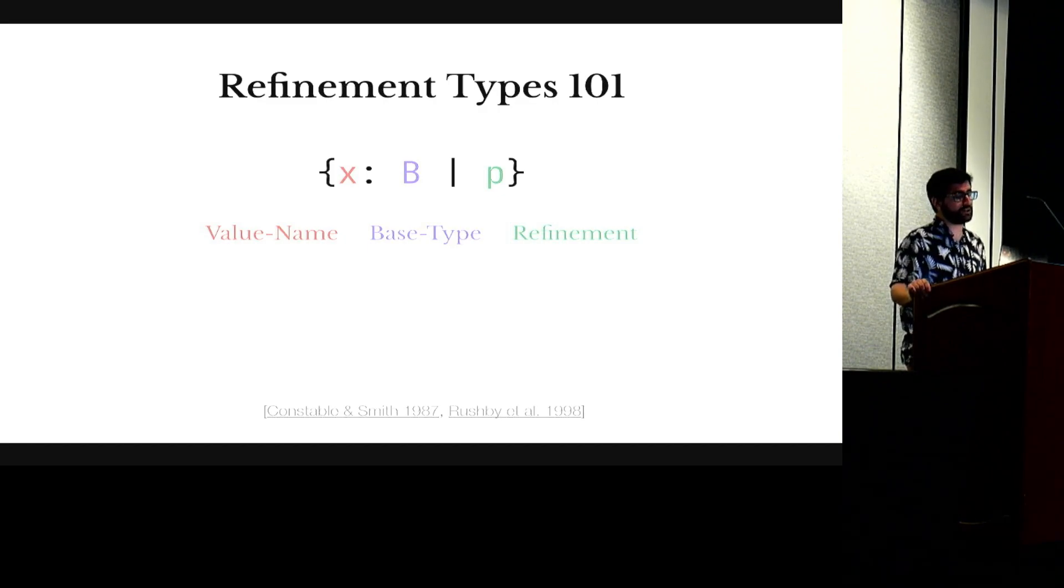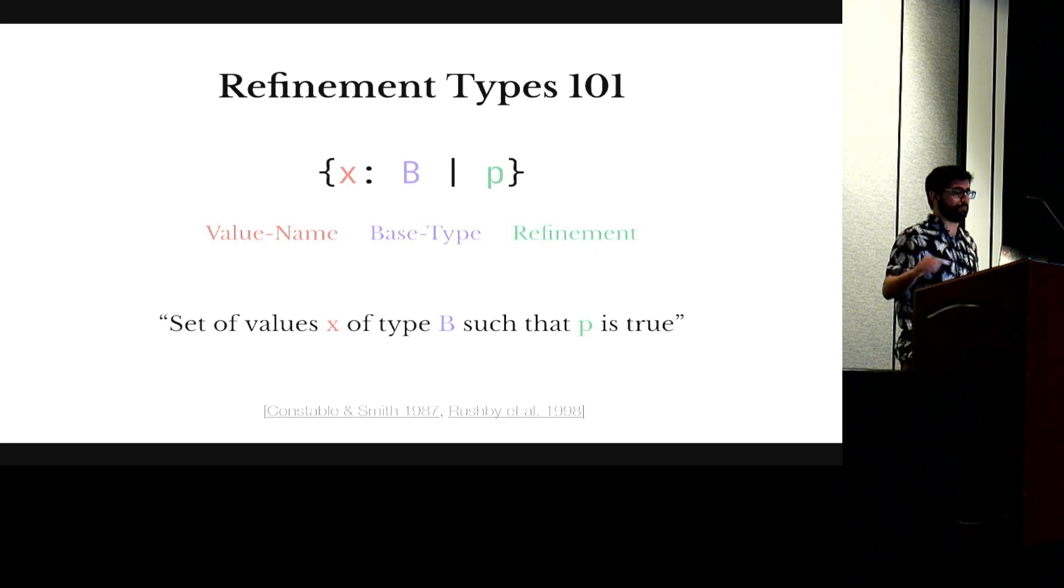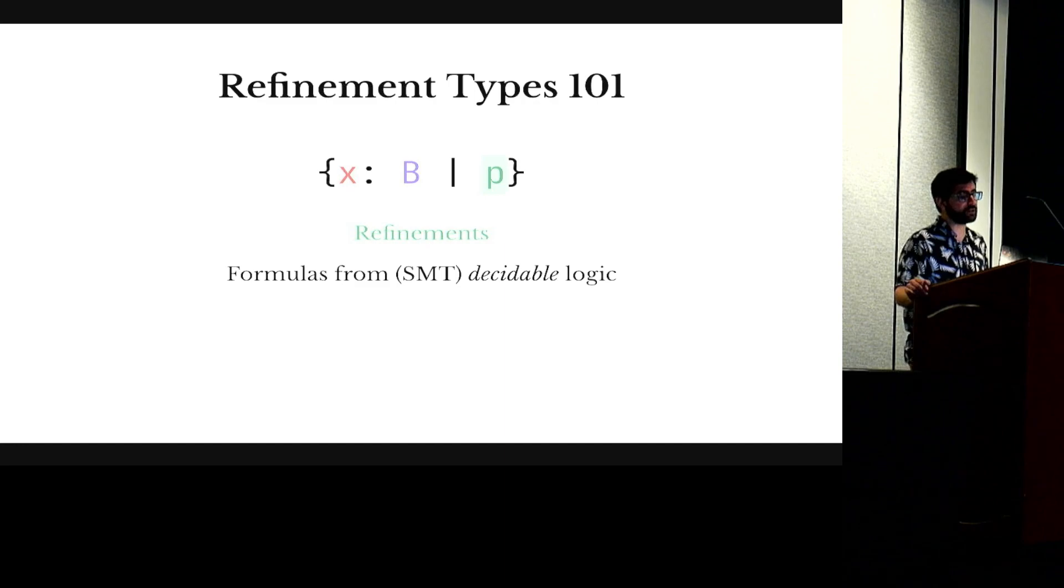So in a traditional presentation, refinement types have this form. It's composed of a value name, a base type, and a refinement. And intuitively they denote the set of values x of some type b that satisfies some predicate p. In our context, these refinements p are taken from a decidable logic, and we take this decidable very seriously.